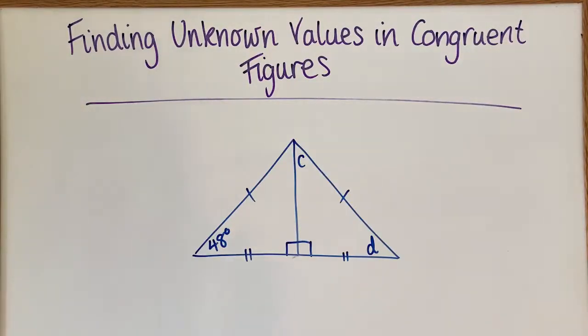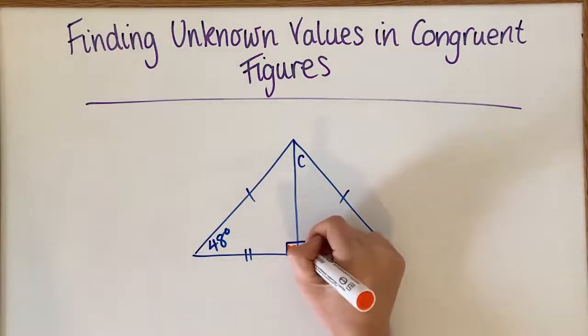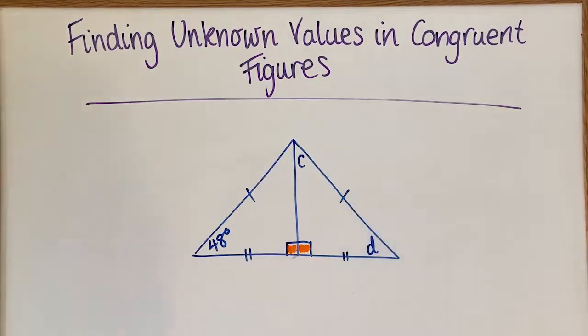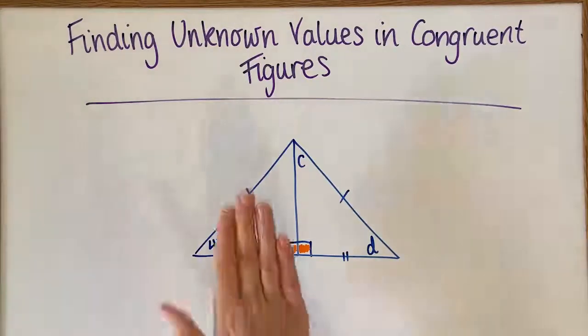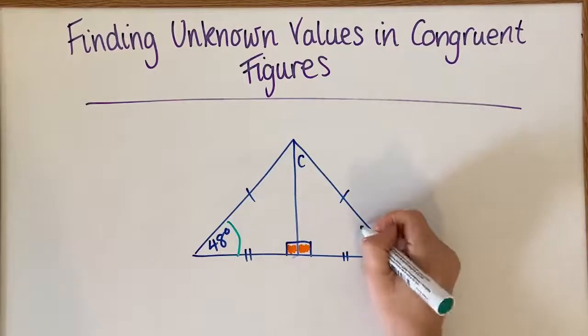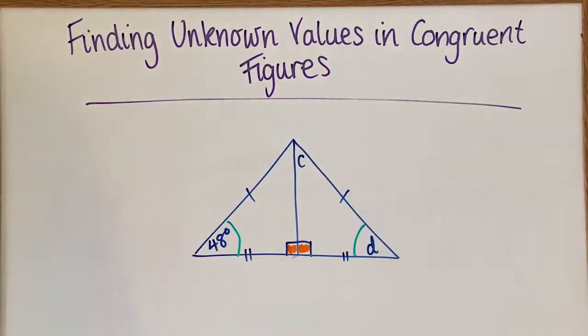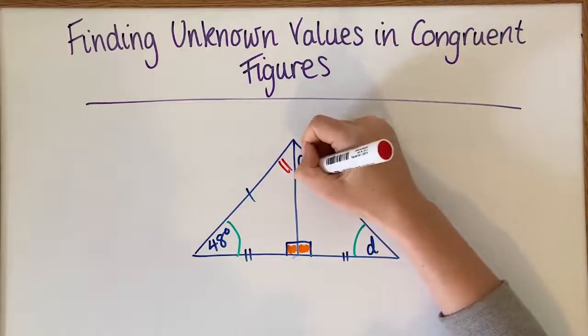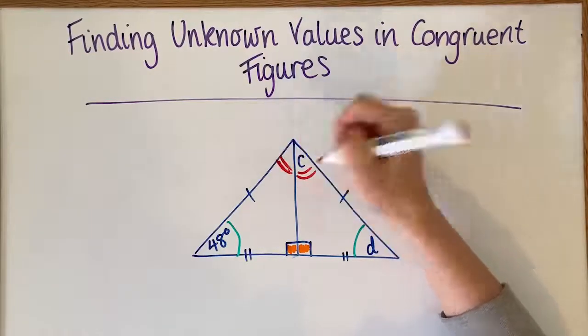All right. So again, what we're going to do is we're going to try and determine what's the same. Now, these are both right angles, so I know that they're going to be identical. So I can see that this is a reflection. So that would mean that this angle is the same as this angle and that this angle is the same as this angle here.